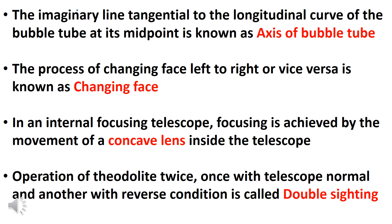The operation of theodolite twice — once with a telescope normal and another with a reverse condition — is called double sighting.